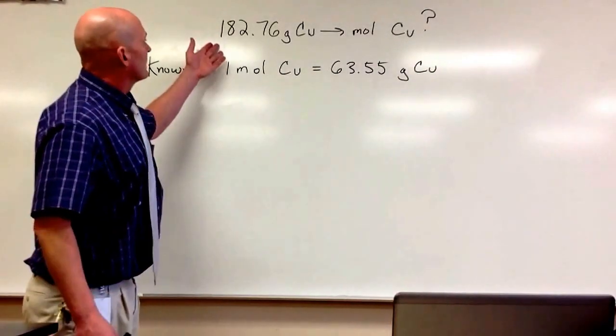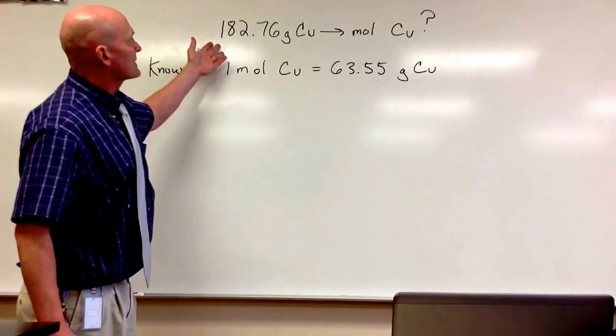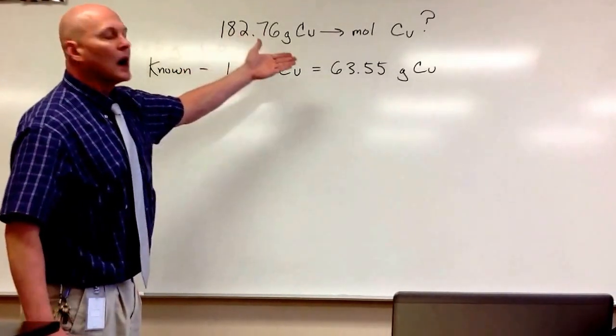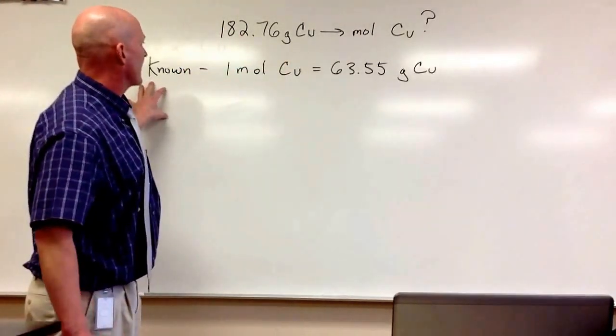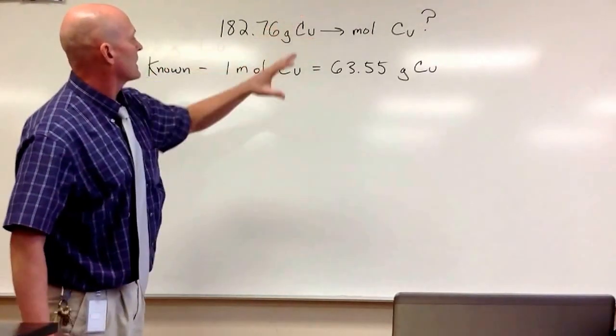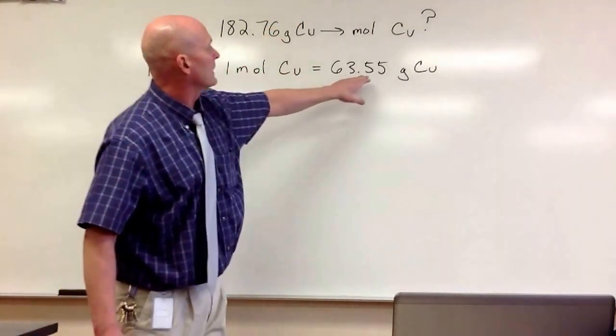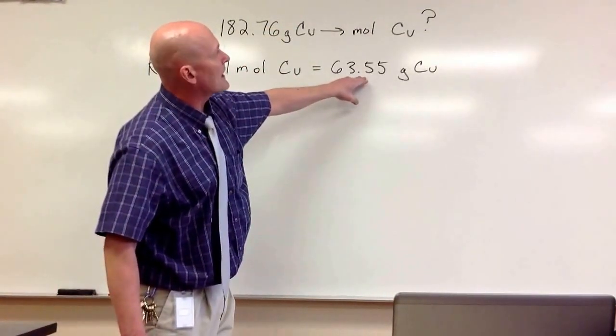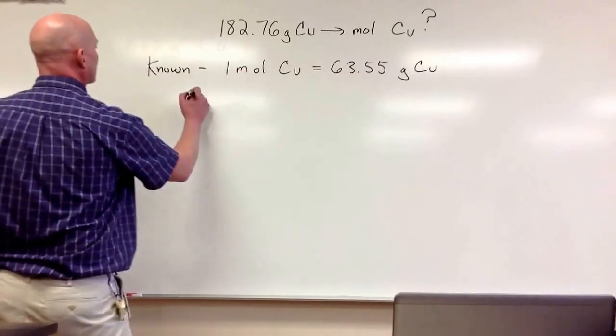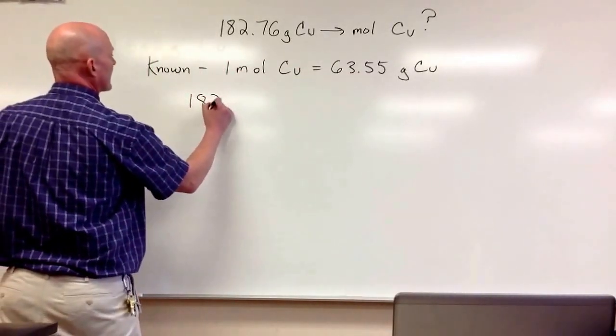Okay, question. 182.76 grams of copper, how many moles of copper is that? We know from the periodic table that one mole of copper has 63.55 grams of copper. So we're going to use that as a conversion factor.